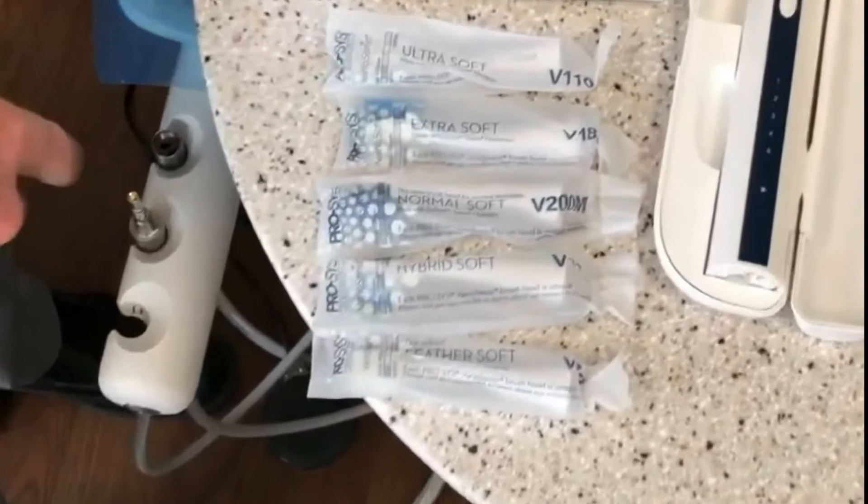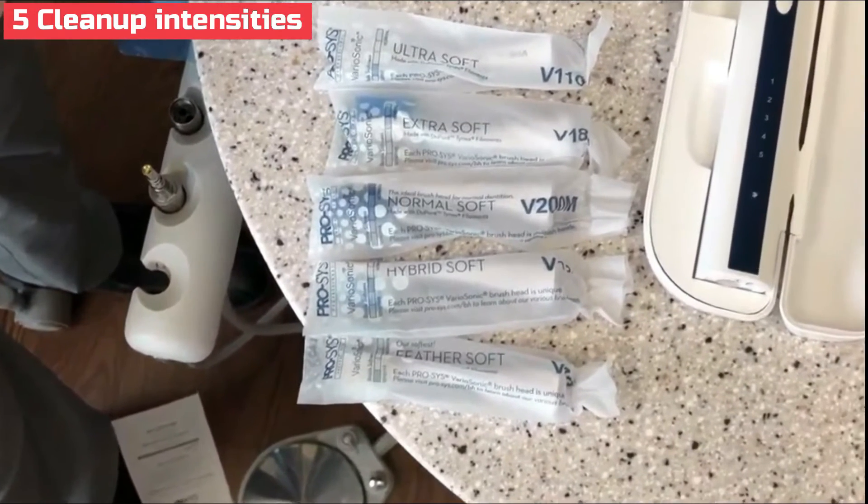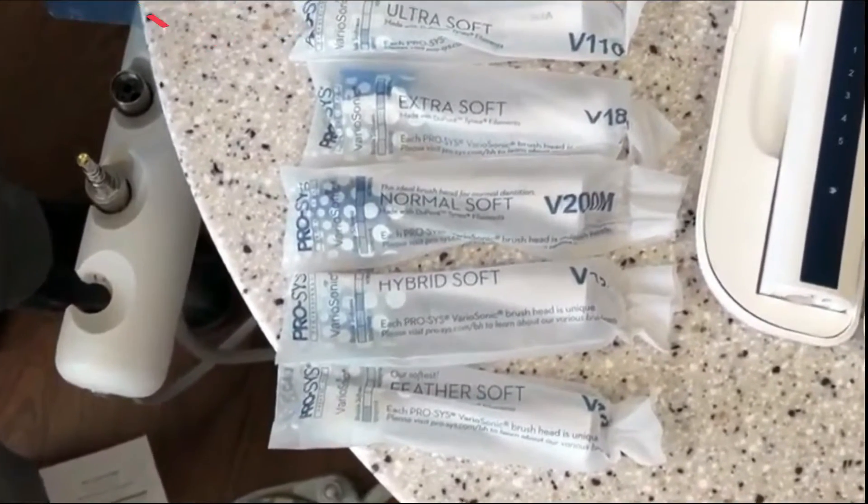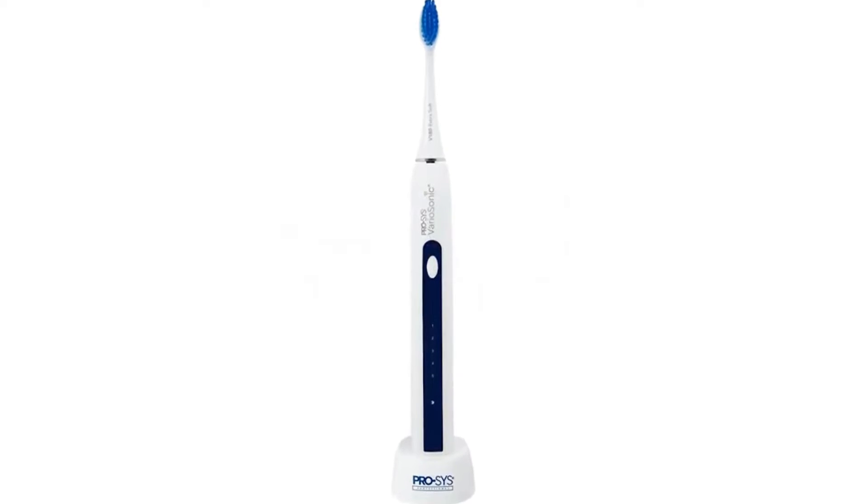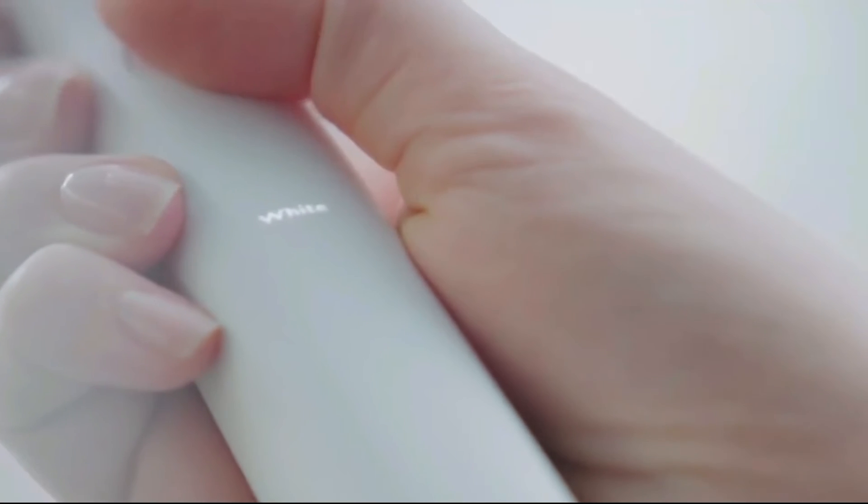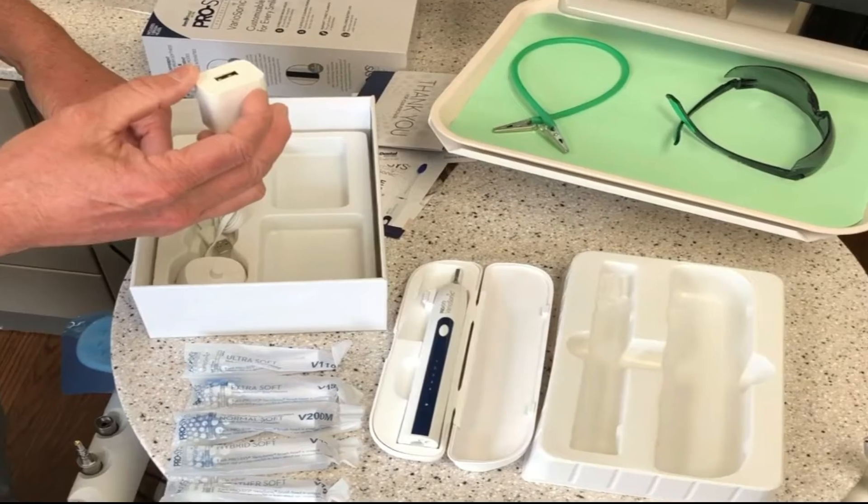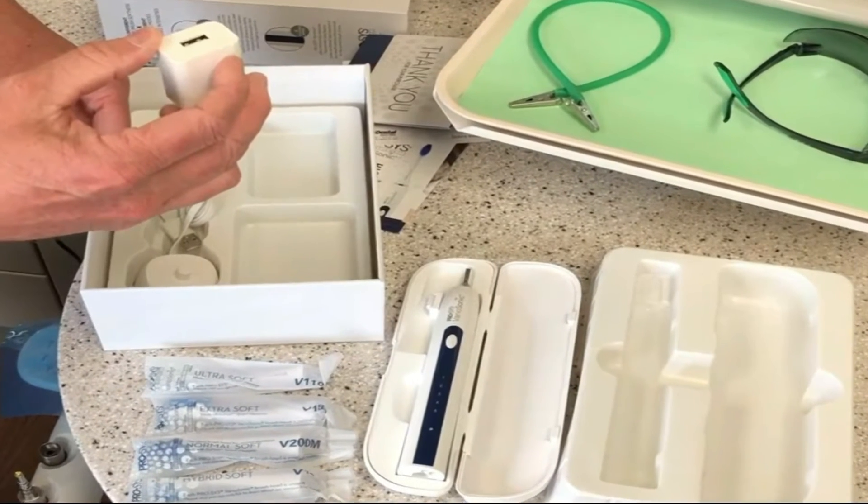Each box contains an electric toothbrush with five cleanup intensities and a fully automated timer for ideal brushing. A lengthy rechargeable battery that powers the electric toothbrush for more than a month under normal use, a USB-enabled charging stand, and a sleek, compact design.